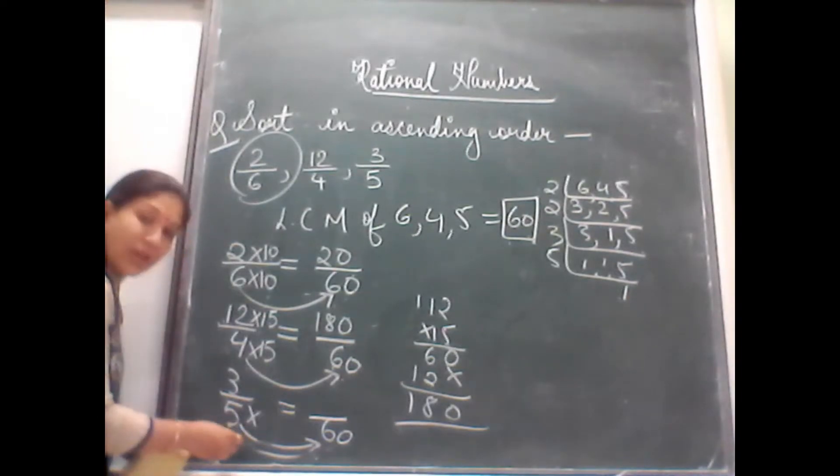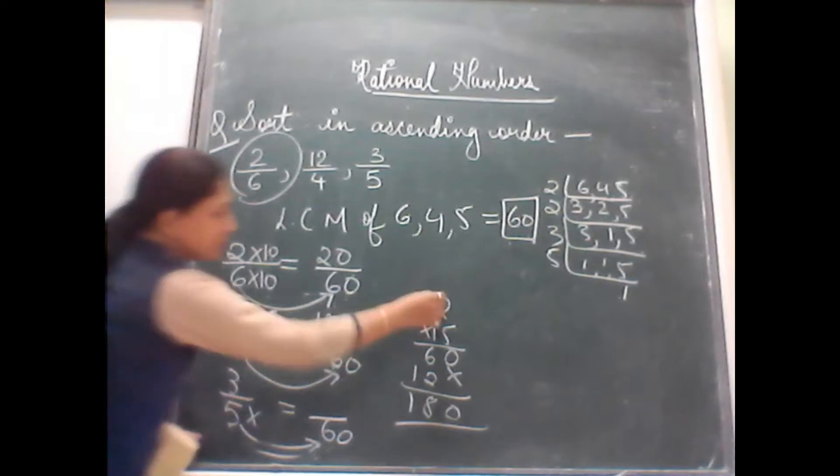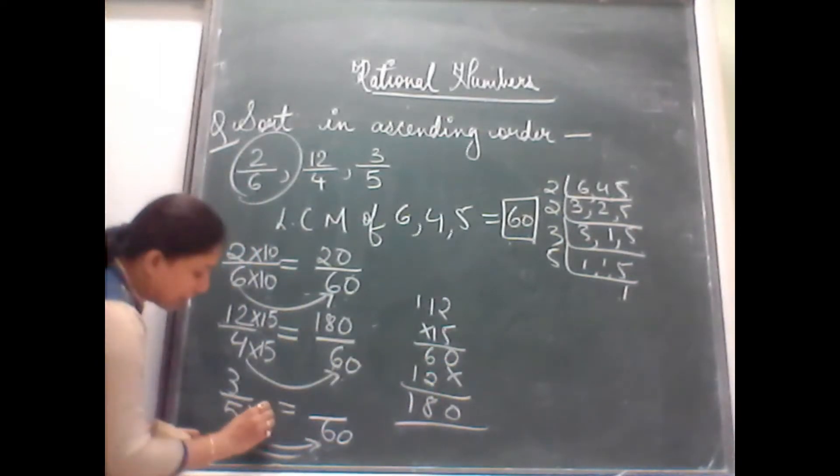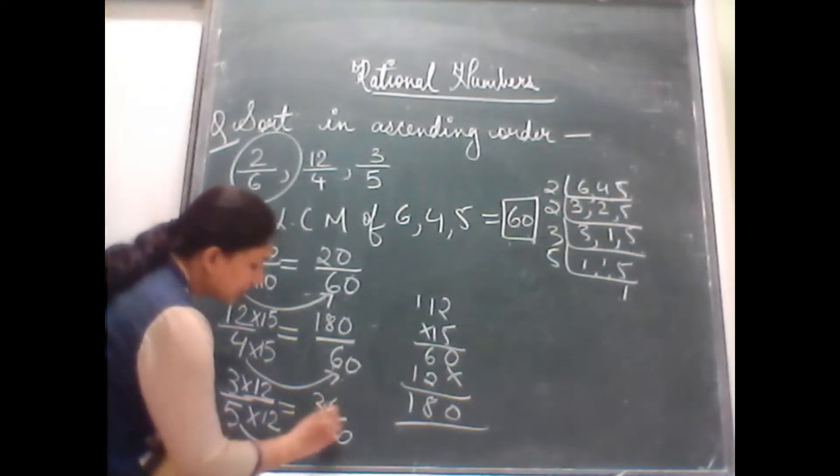So 15, 12 times is 180. Move to the next one. In 5's table, when do you get 60? You get 12, 5 is 60. You get it in 12 times. So multiply with the same number. So 12, 3 is 36.